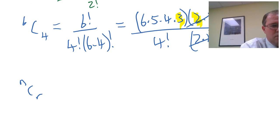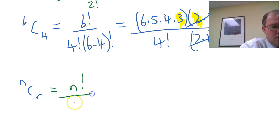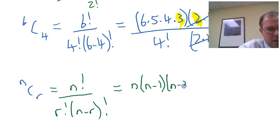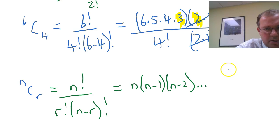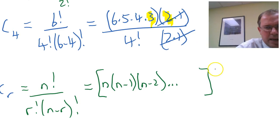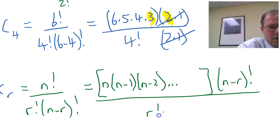Now, when I'm developing n choose r, I've got n factorial over r factorial, n minus r factorial. So what I want to do is essentially write this as n, n minus 1, n minus 2. Keep going to a certain point. And I'm just going to put a big bracket there and stop.